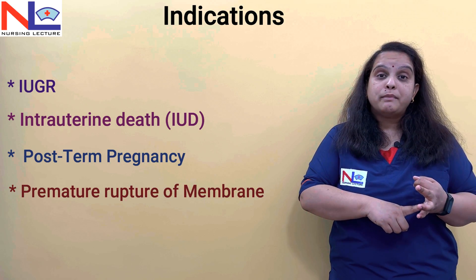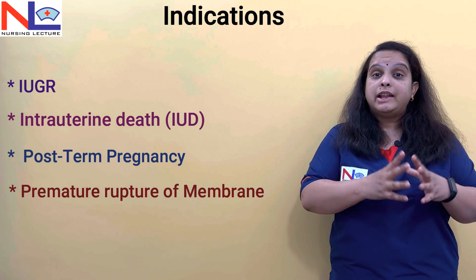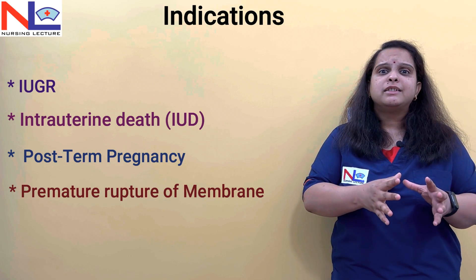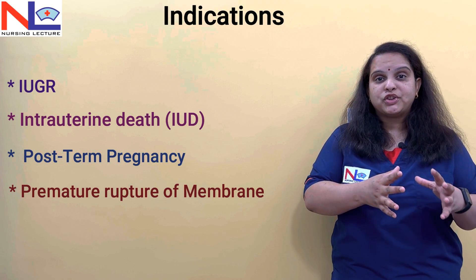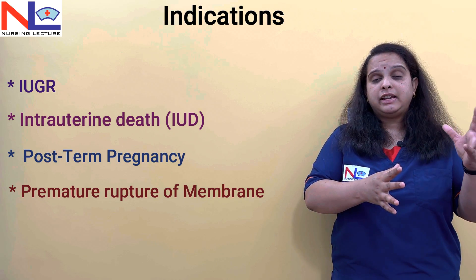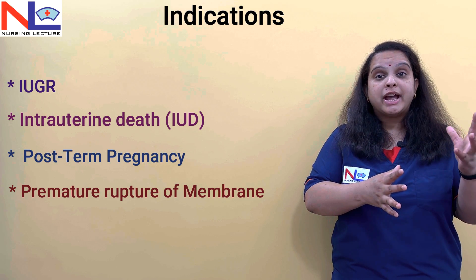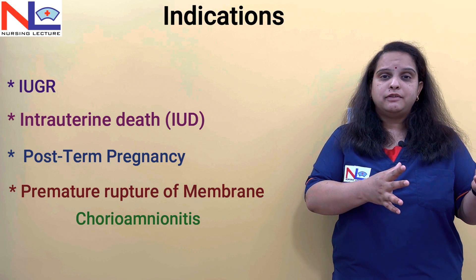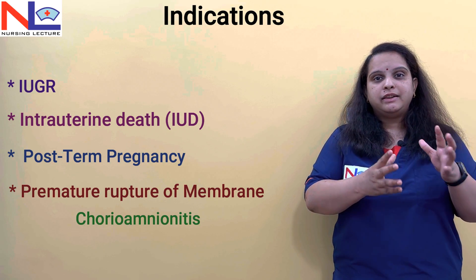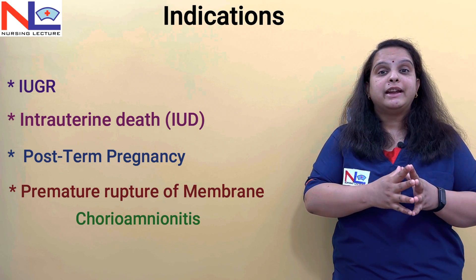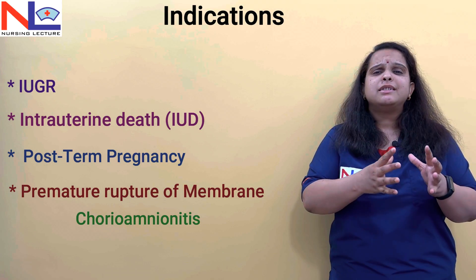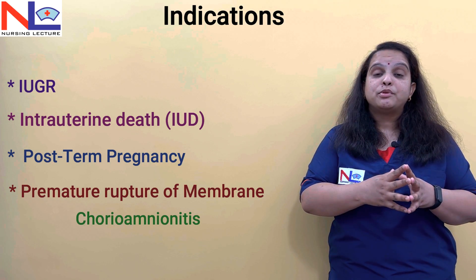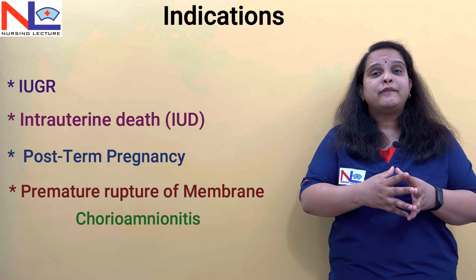If premature rupture of membranes happens, where the labor process has not started yet but membranes get ruptured earlier, then bacteria present in the vaginal flora can ascend and infect the fetal membranes — chorion and amnion — leading to chorioamnionitis. So to avoid that infection or inflammatory process, we can induce the labor process once the membrane gets ruptured. These are certain indications where we can initiate or induce the labor process and allow the fetus to deliver out vaginally.